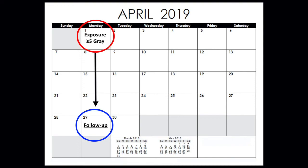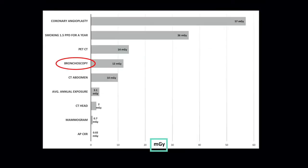However, in the bronchoscopy suite, the relative radiation dose is extremely low with the average dose at our institution around 12 milligray. So reaching a dose that will require follow-up is extremely rare.